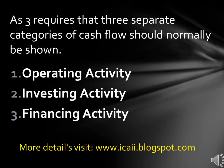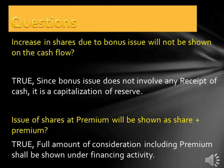AS 3 requires that three separate categories of cash flow should normally be shown: Operating activity, Investing activity, and Financing activity. Increase in shares due to bonus issue will not be shown in the cash flow statement, since bonus issue does not involve any receipt of cash — it is a capitalization of reserves. Issue of shares at premium will be shown as share plus premium; the full amount of consideration including premium shall be shown under financing activity.